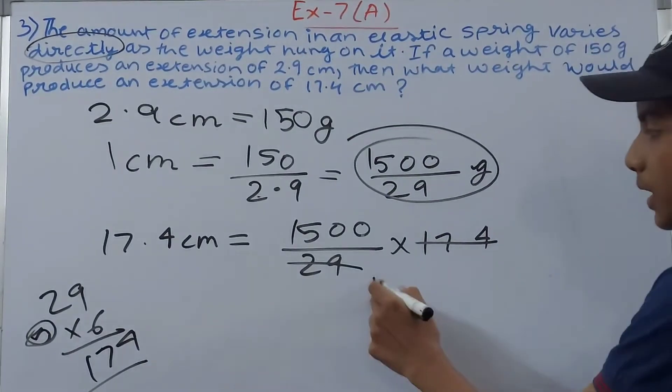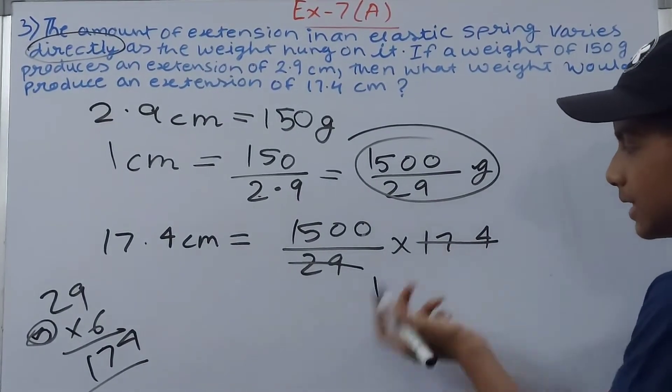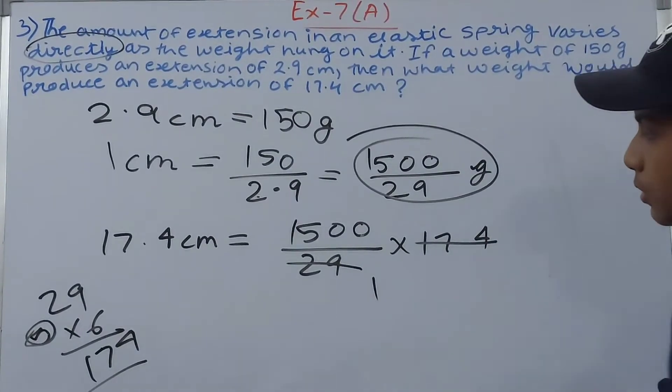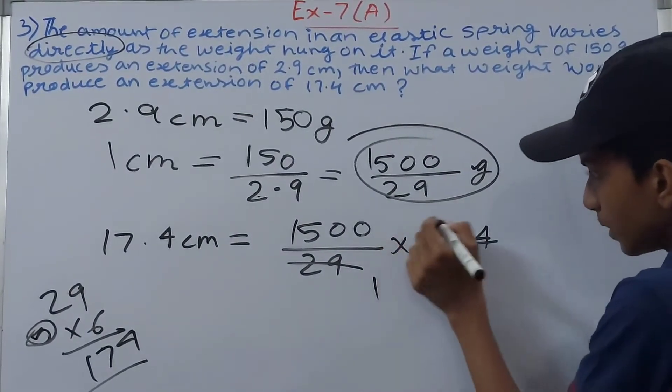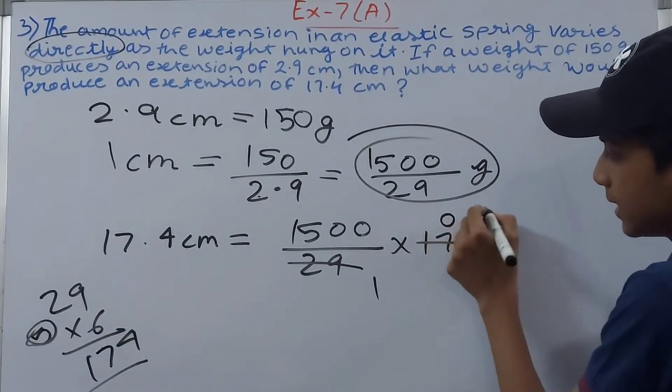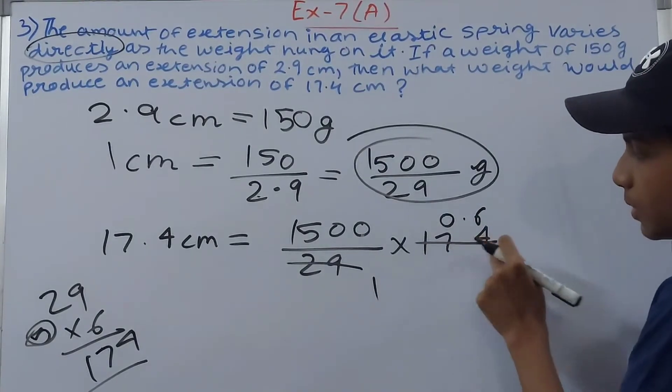So this goes 1 time and 174, which I'll consider as 17.4. So this will be going 0.6 times, because there is one decimal point. Now I will multiply 1500 into 0.6.